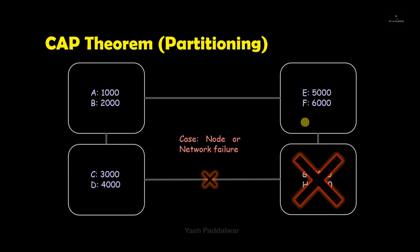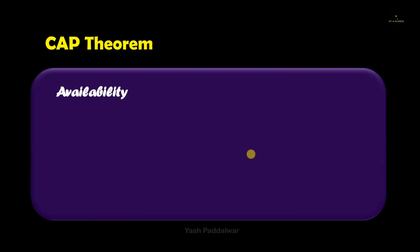A distributed system must be partition tolerant always. There should be no option for eliminating this property from the CAP theorem, because the definition of distributed system itself says that data will be stored and processed at different nodes parallelly. So if a particular node fails, the entire system should not go down — it should tolerate this failure by creating a partition and working independently.